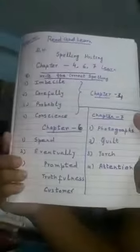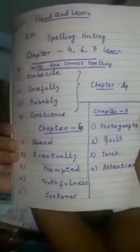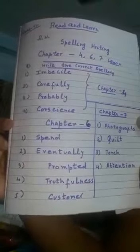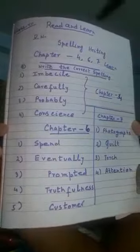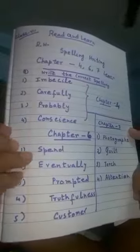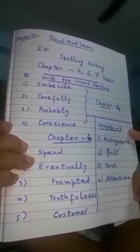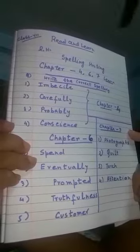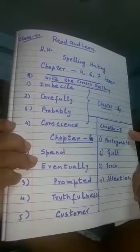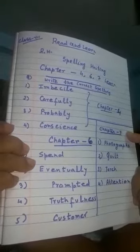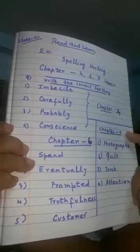Now come to chapters 4, 6, and 7. These are the spellings I am showing you. Only learn these spellings by heart. Write the correct spellings. From chapter 3: invehicle, carefully, probably, conscience — these four spellings.